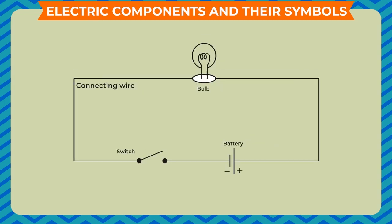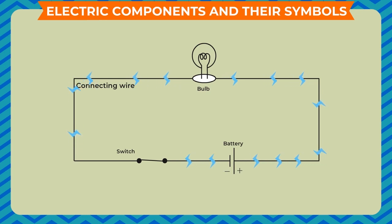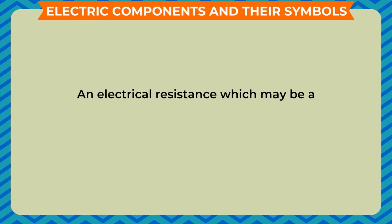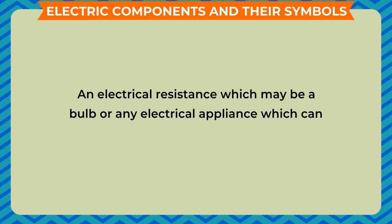In a simple circuit, we cannot draw the actual components. Drawing all the components with their pictures is a time-consuming job. So electrical components and devices are represented by symbols in a circuit diagram. The three basic requirements of an electric circuit are: a source of electricity, which may be a cell or a battery; a conducting path, which is provided by the wires; insulation, which makes the wires shock-free as the current flows in copper only; and an electrical resistance, which may be a bulb or any electrical appliance that can use up the electrical energy.